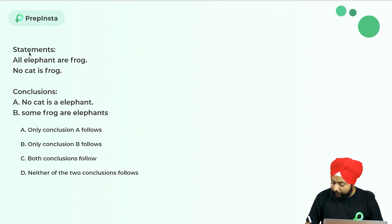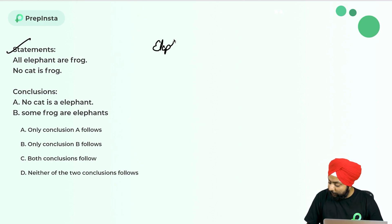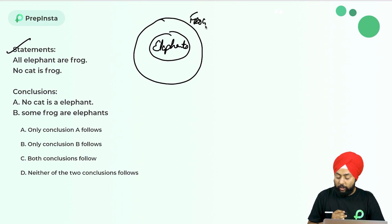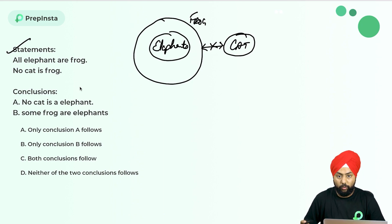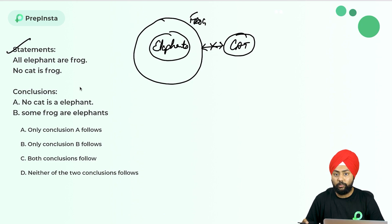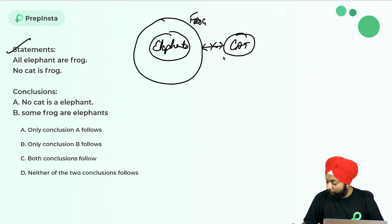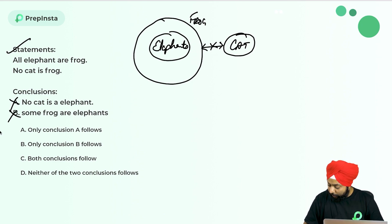The next question is again from syllogism. Statements: all elephants are frogs; no cat is frog. Drawing the Venn diagram: all elephants fall under frogs, and cats have no relation to frogs. Conclusion one: no cat is elephant. Since all elephants are frogs and no cat is a frog, no cat can be an elephant — that is correct. Conclusion two: some frogs are elephants. That is wrong. So neither conclusion follows — option D is correct.